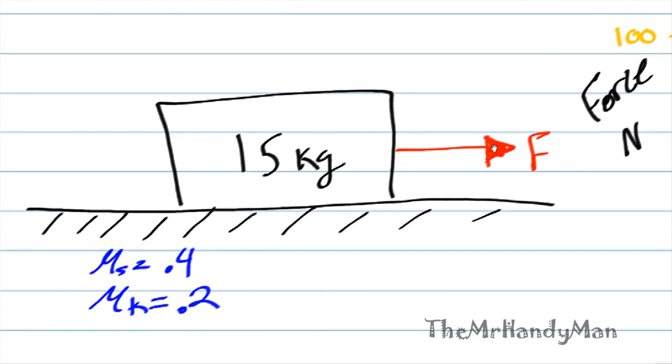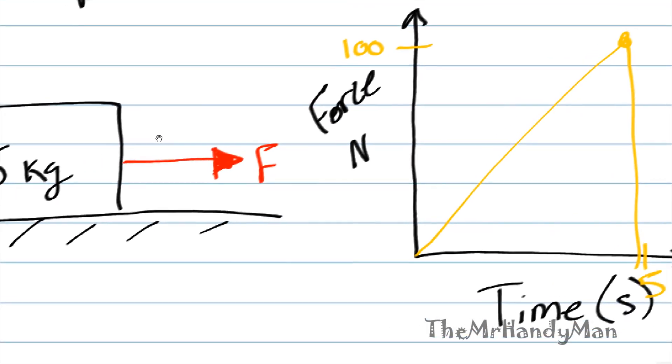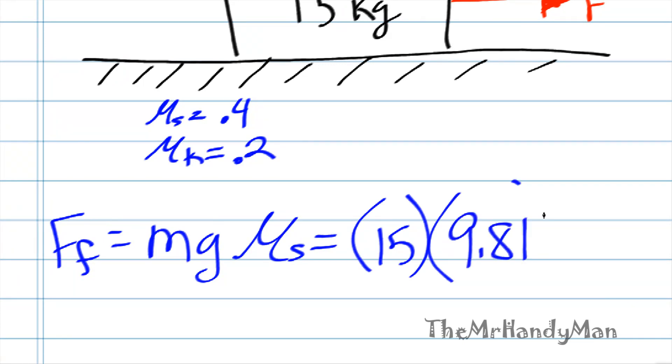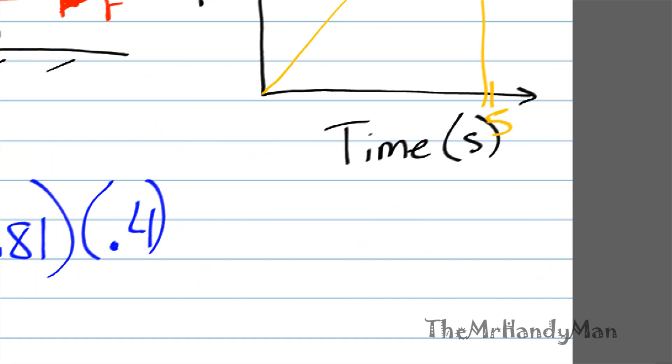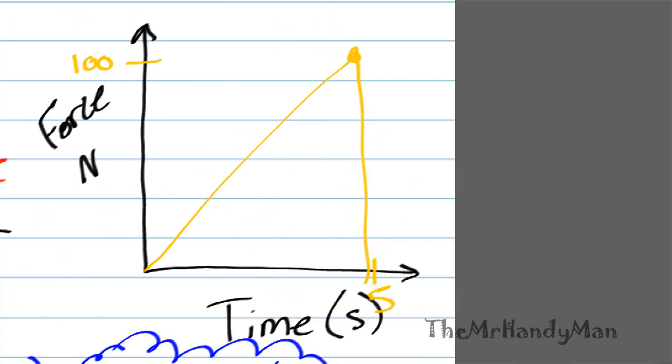First off, we need to look at this and say we need to know when this guy is going to start moving because it's not going to start moving right away. There is a point that it will start moving but not right away. The force of friction is going to be mg times our static friction. You have mass which is 15 kg, gravity which is 9.81 meters per second squared, and coefficient of static friction that is 0.4. That equals 58.86 newtons. That's the maximum amount of resistance that we're going to reach.